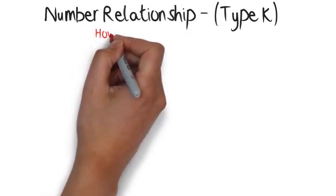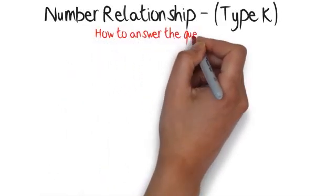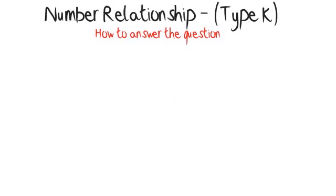How to answer the question: the first thing you should do is work out the relationship between the numbers in the first two groups. Focus on the first group of numbers. What must you do with the two outside numbers to get the middle number? Do you need to add them together, multiply them, or subtract one from the other? When you have worked out the rule for the first group, move on to the second group of numbers to check the rule.